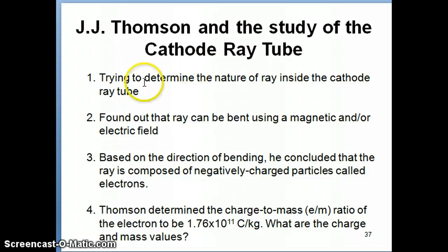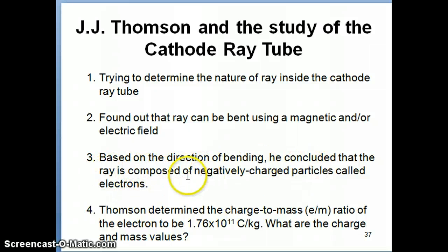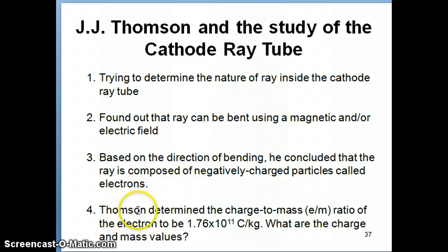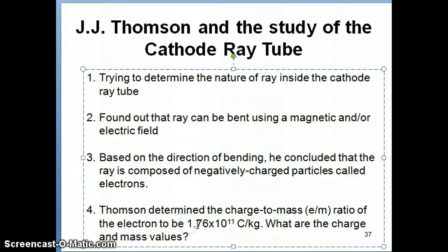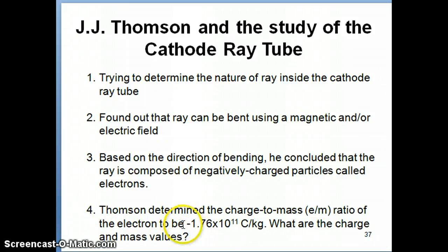Here's a brief summary of what Thomson did in the previous video. At the end of his experiment he discovered that the cathode ray is composed of negatively charged particles, which were later called electrons. Thomson was able to determine something called the charge-to-mass ratio of the electron, which has a value of negative 1.76 times 10 to the 11th Coulombs per kilogram.